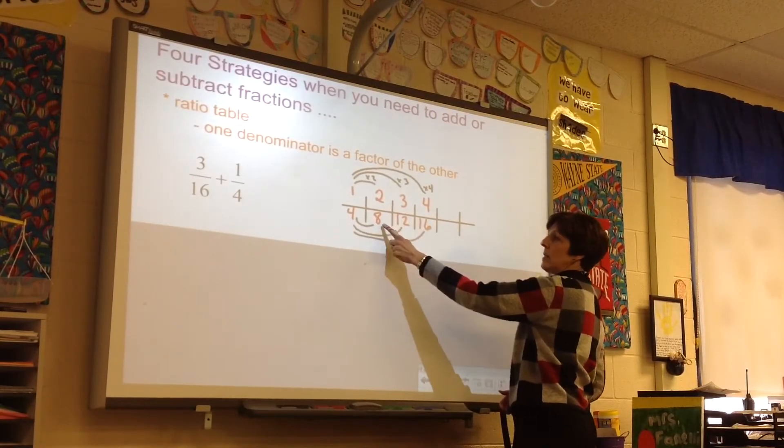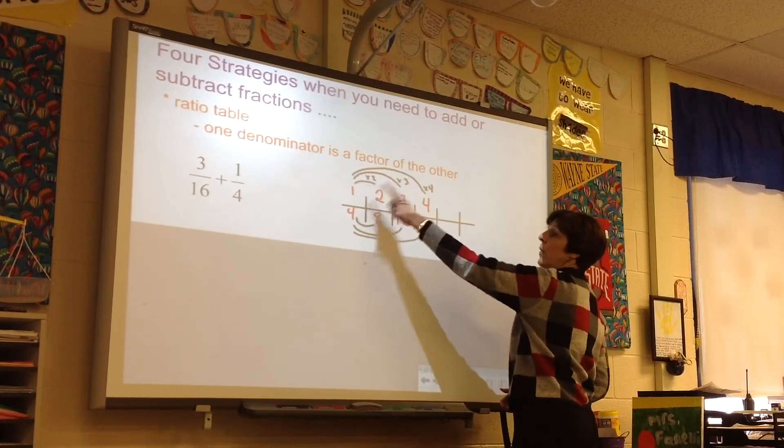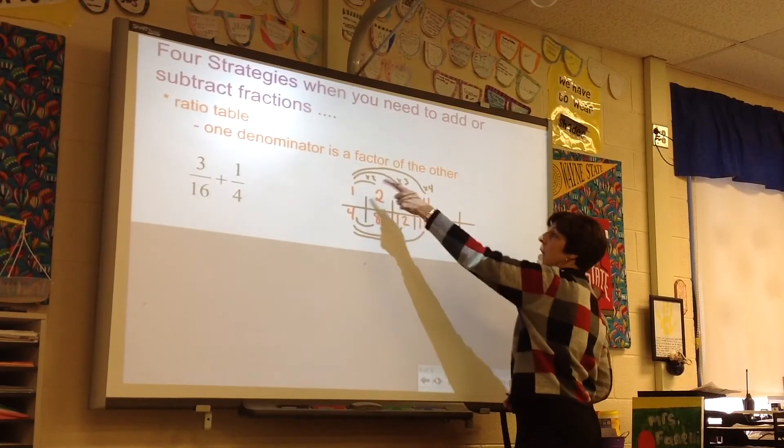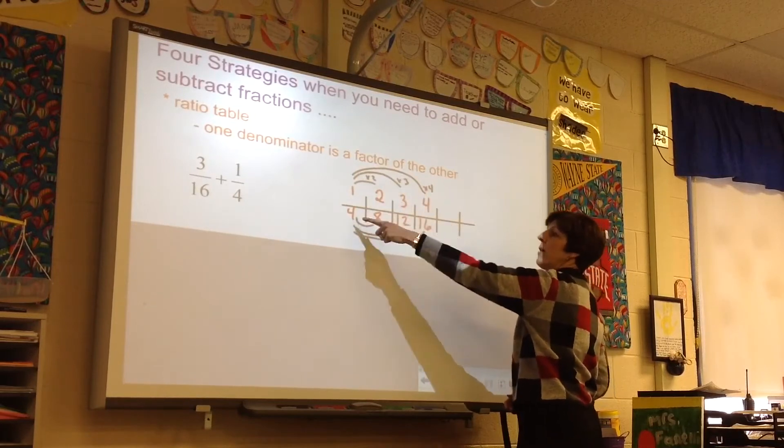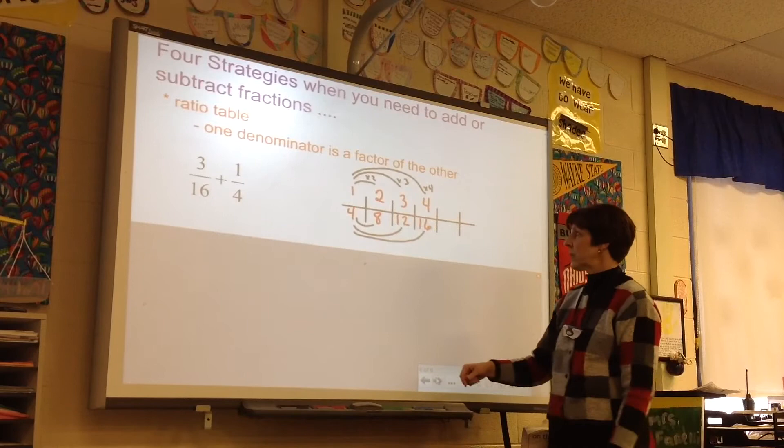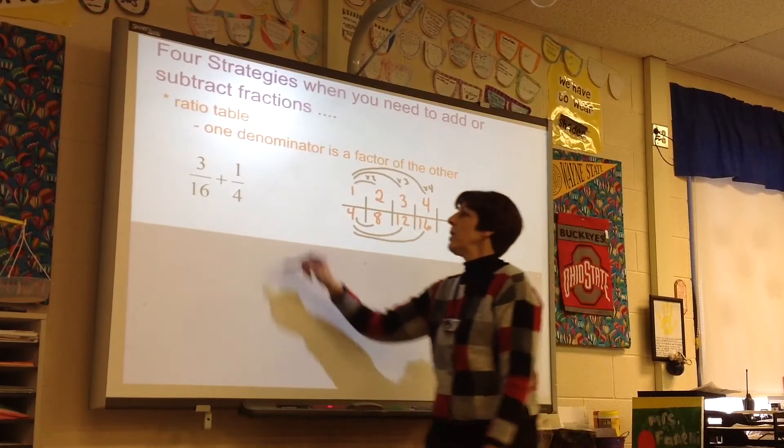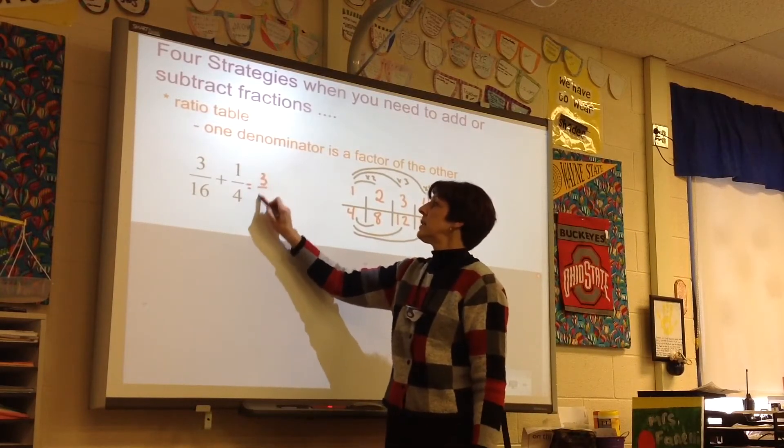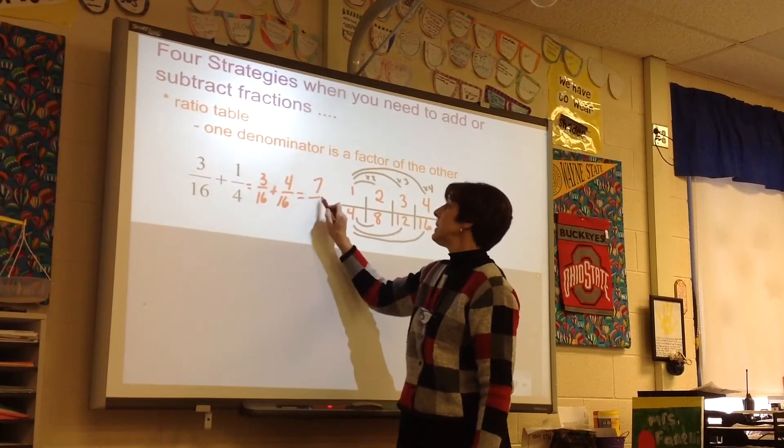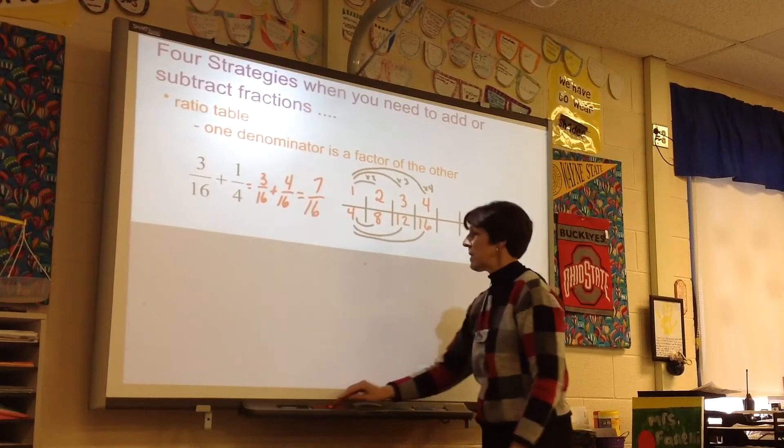Multiply by 2 and get 2 eighths. Then multiply numerator and denominator by 3 for 3 twelfths. Then multiply the numerator by 4, the denominator by 4. Or an equivalent fraction would be 4 sixteenths. So this one becomes 3 sixteenths plus 4 sixteenths equals 7 sixteenths.